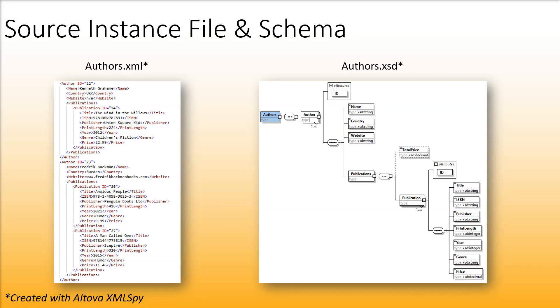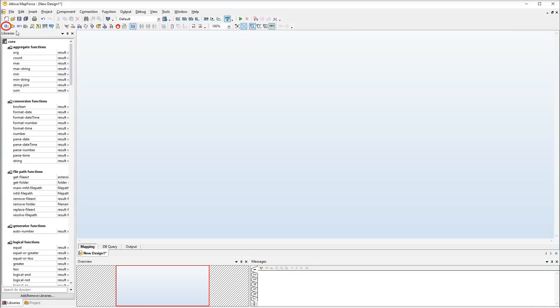Our source component is an XML file with a schema definition. Let's add our source component to the mapping.